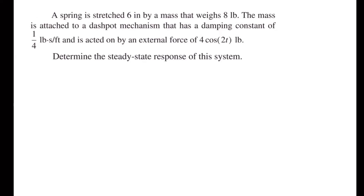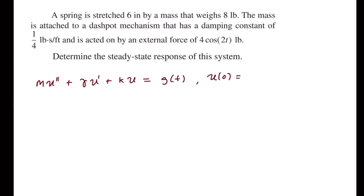For this one, we're going to first figure out what it is that we're modeling. Our differential equation will be m times u double prime plus gamma times u prime plus k times u equals some g of t, and we might have initial conditions: the initial position of the mass and initial velocity of the mass.